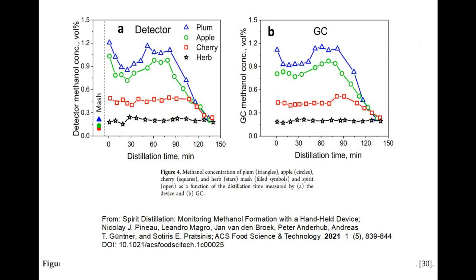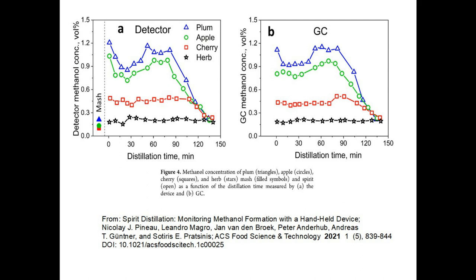These graphs come from Pinot's paper, referenced here. The paper is about a novel technique for methanol measurement that is more portable than the cumbersome gas chromatography. The left graph shows the methanol as measured by their new device, and the right one shows it as measured by gas chromatography from the same samples, which were taken throughout batch distillation runs from washes based on plum, apple, cherry and herb. Herb refers to a mixture of industrial ethanol and herb rather than fermented wash, intended as a control. In no case is there a dramatic fall-off in methanol concentration as the run progresses, apart from at the end in the tail section.